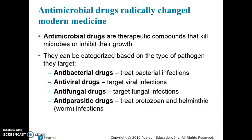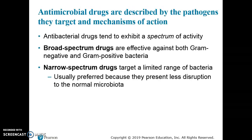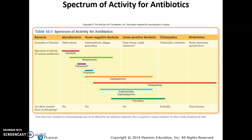When we look at drugs, there is a spectrum of activity. Two broad categories are broad spectrum drugs and narrow spectrum drugs. Looking at this figure, narrow spectrum drugs have a very narrow range of activity, targeting only specific groups of organisms such as mycobacterium, gram-negative bacteria, gram-positive bacteria, and chlamydias and rickettsias.